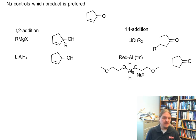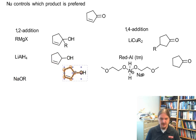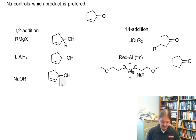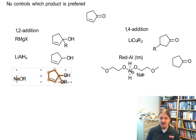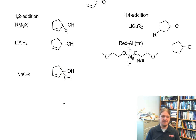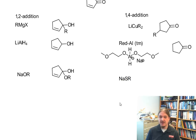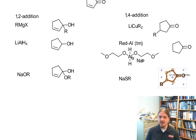In the previous video, I showed thiol nucleophiles. Alkoxide nucleophiles are going to tend to prefer the 1,2 addition, and it's worth noting that under basic conditions this is totally reversible. But thiol and sulfide nucleophiles are going to prefer attack at the 4 position.